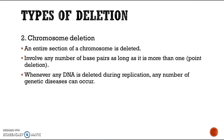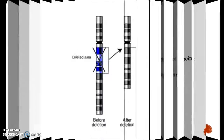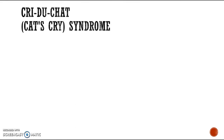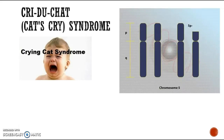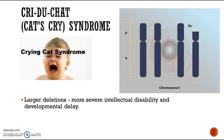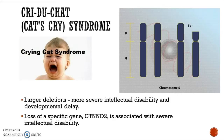The second type of deletion is chromosomal deletion, where an entire section of a chromosome is deleted. An example of a disease caused by deletion mutation is Cri-du-chat syndrome, also known as 5p- syndrome. This is a chromosomal condition caused by a deletion of the end of the short arm of chromosome 5. The size of the deletion varies among affected individuals, where larger deletions tend to result in more severe intellectual disabilities and developmental delay.